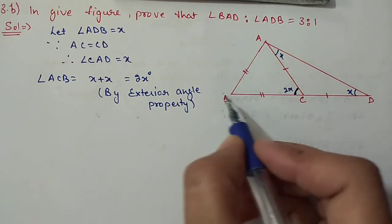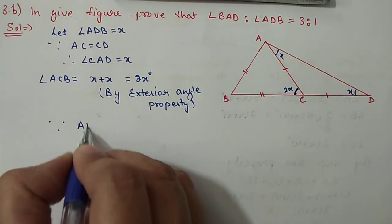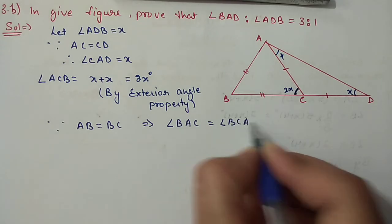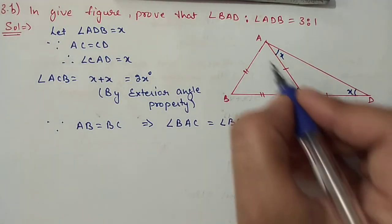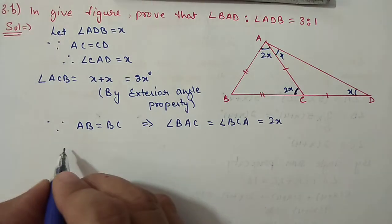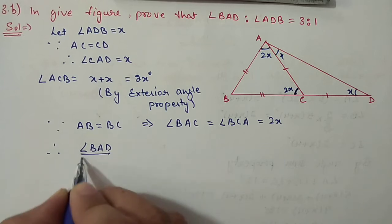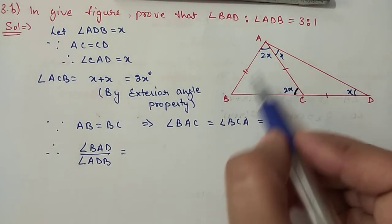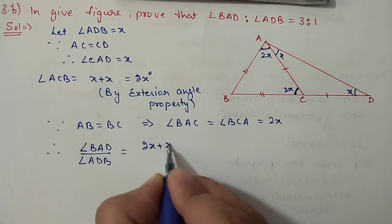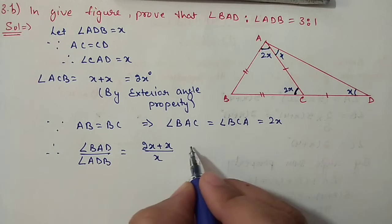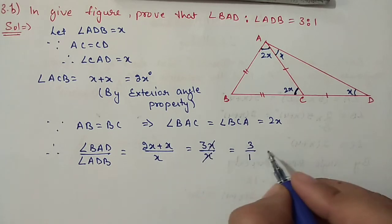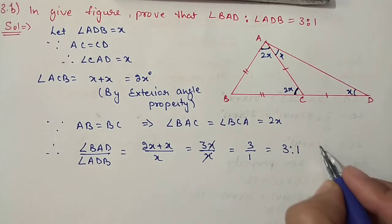Because AB and BC are equal, angle BAC is equal to angle BCA, so both angles are equal to 2x. Now finding the ratio: angle BAD means this whole angle, from here to here, which is 2x plus x. And angle ADB is x. So the ratio is 2x plus x over x, which is 3x over x. Cancelling x, the ratio is 3 is to 1. Hence proved.